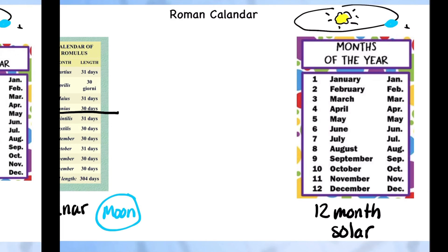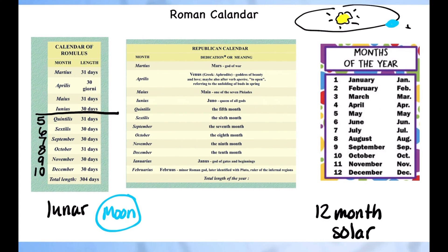After King Romulus comes another king, and he changes it to look even more like our current calendar with 12 months. He adds two new months that also look very similar to our months. So at this point we have the fifth, sixth, seventh, eighth, ninth, and tenth months accounted for.